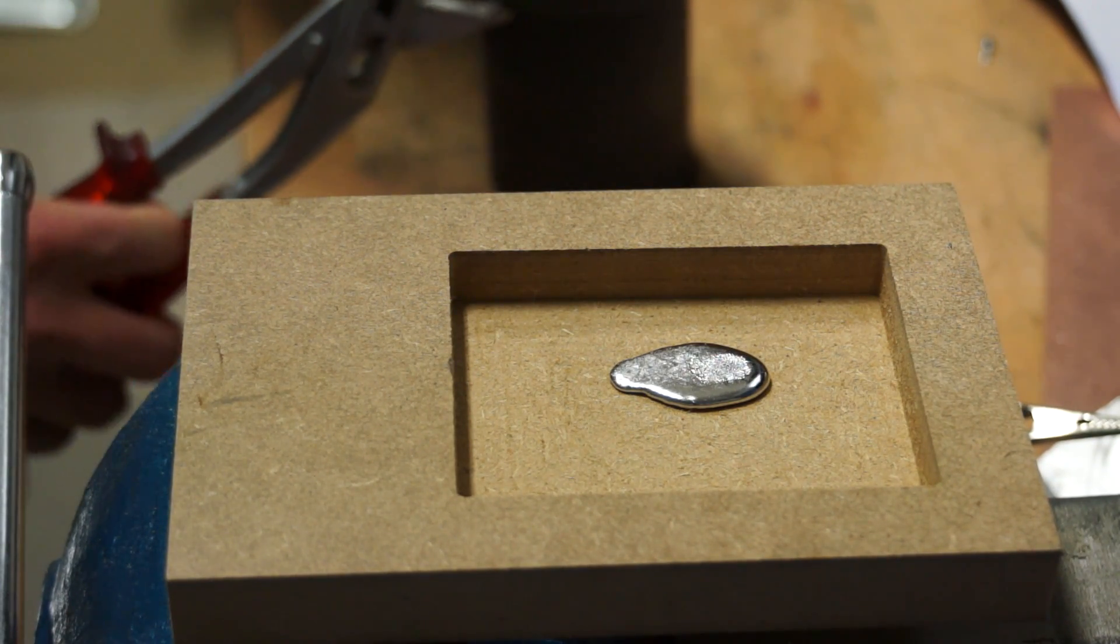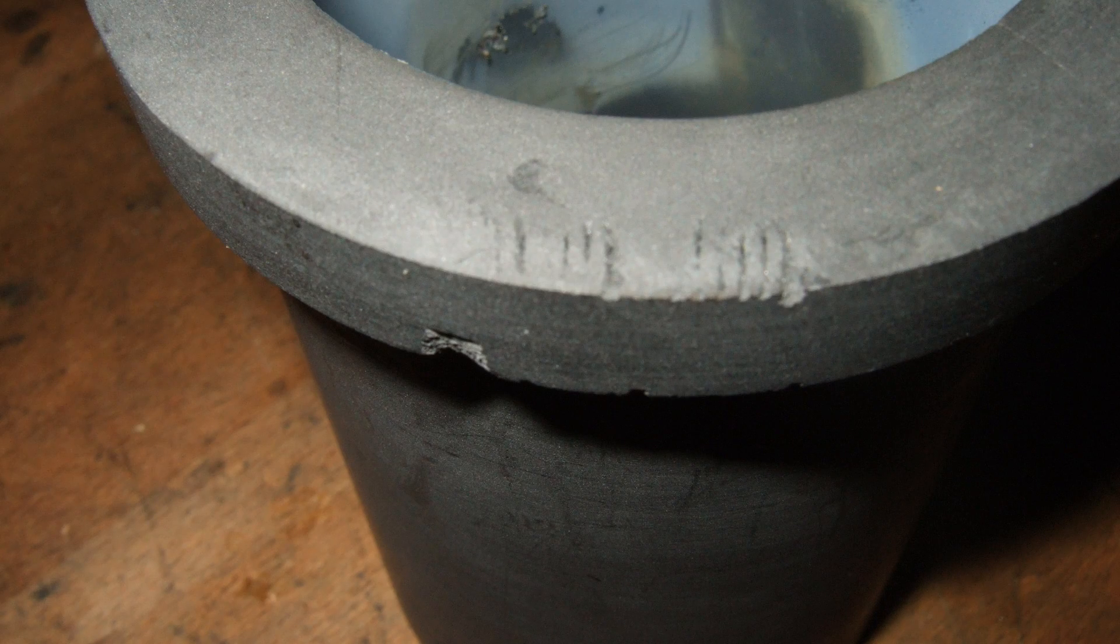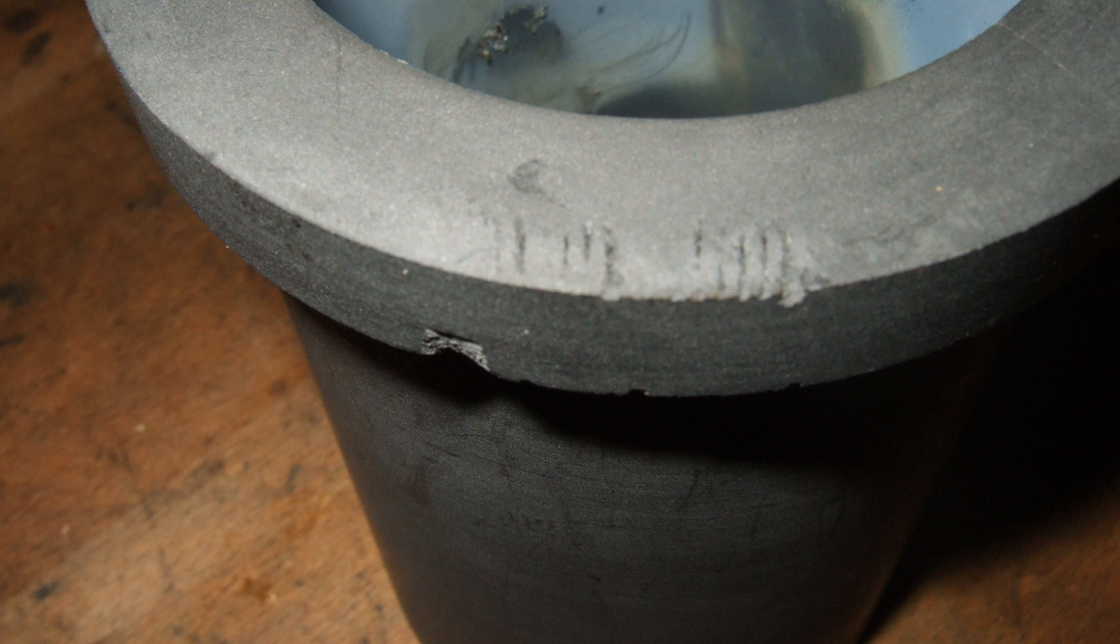And I had another problem. How to hold the crucible during pouring? It breaks if you try to keep it with a gripper. So, I had to choose a bigger tool.